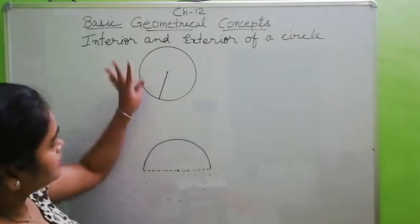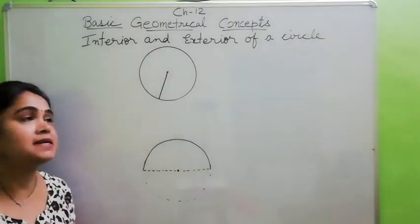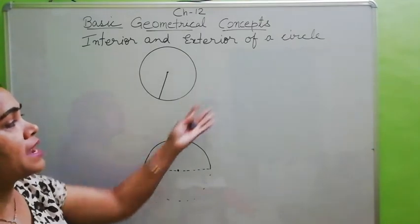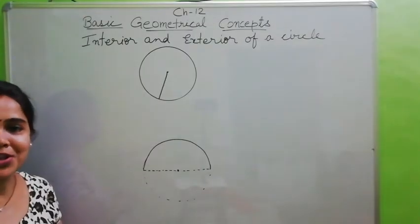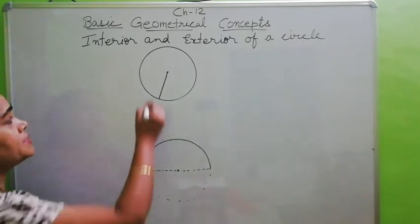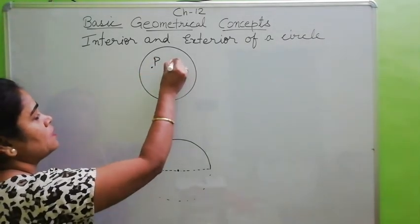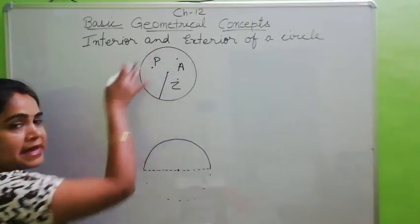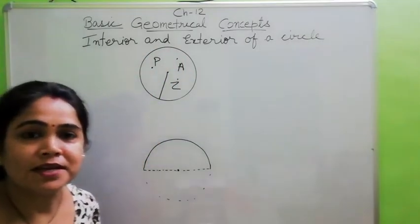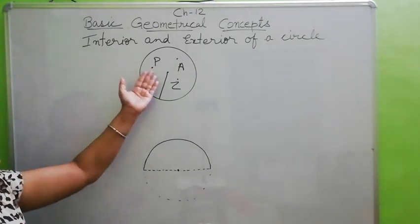Next, if you find the region within this circle, the region inside the circle is called the interior of the circle, and the region outside the circle is called the exterior of the circle. So if any point — suppose P, A, or Z — these are lying inside the circle, so they are called points in the interior of the circle.